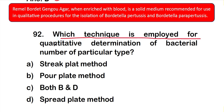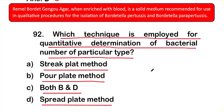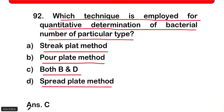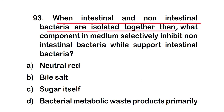Question number 92: Which technique is employed for quantitative determination of bacterial numbers of a particular type? Option A: streak plate method, option B: pour plate method, option C: both B and D, option D: spread plate method. The right answer is option C — both pour plate method and spread plate method are employed for quantitative determination of bacterial numbers.